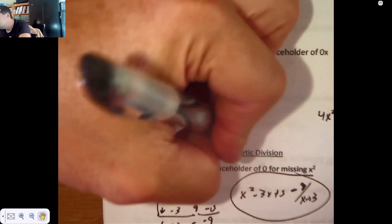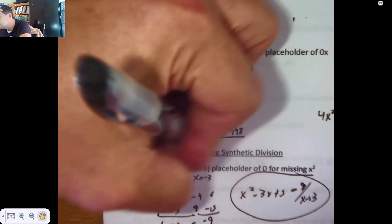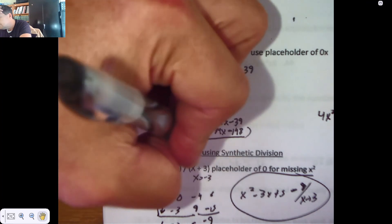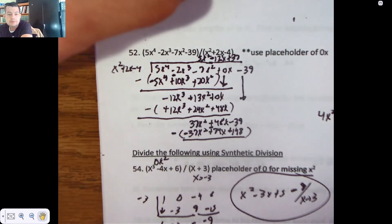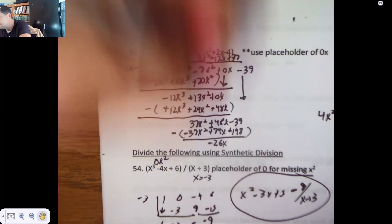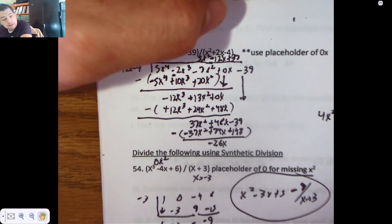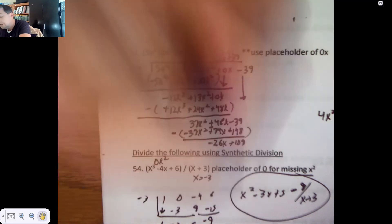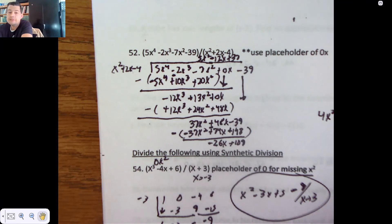Most kids make mistakes on long division from sign changes, sign mistakes. That's where they make their mistakes. So don't be that kid. We got 48 take away 74, that's negative 26x. And then we got negative 39 plus 148, which is 109. And I'm done, because I can't turn x squared into x.